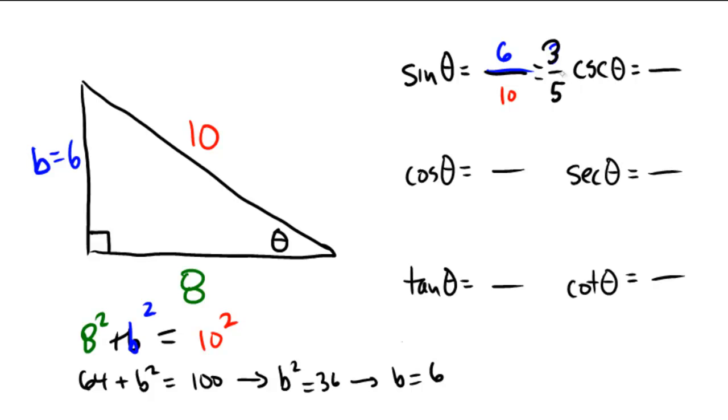For the cosine, we have adjacent over hypotenuse. So that would be an 8 over a 10. And again, this one reduces to divide by 2 and divide by 2 to give me a 4 over 5.